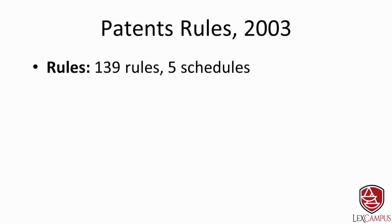Regarding the Rules: the basic unit of the rules are the rules themselves. There are 139 rules in the Patent Rules 2003, and 5 schedules. The Patents Act also has one schedule, but that schedule refers to amendments to the Indian Patents and Designs Act 1911 and pertains to the repeal and savings provision.